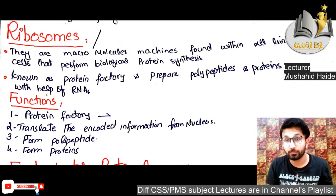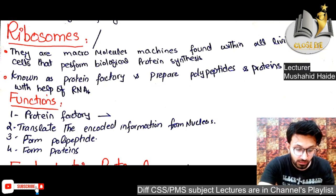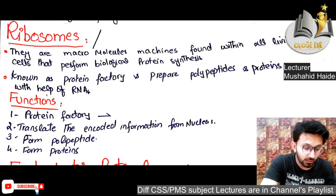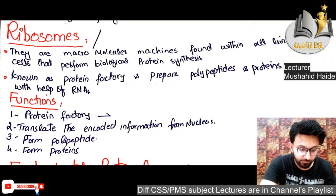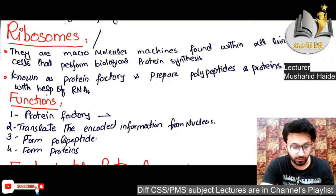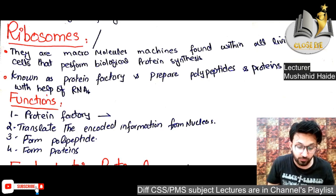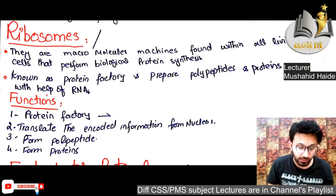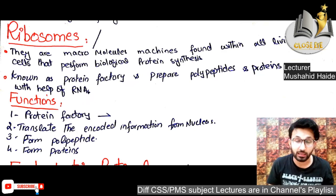Ribosomes are also organelles that help in protein synthesis. They are macromolecular machines found within all living cells that perform biological protein synthesis. Known as the protein factory, they prepare polypeptides and proteins with the help of RNA. Functions include protein synthesis and translating encoded information from the nucleus to produce peptides, polypeptides, and proteins.